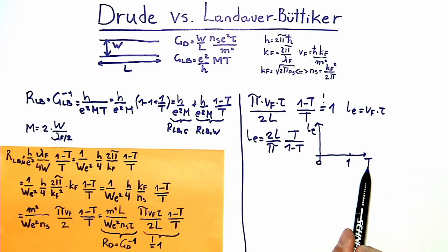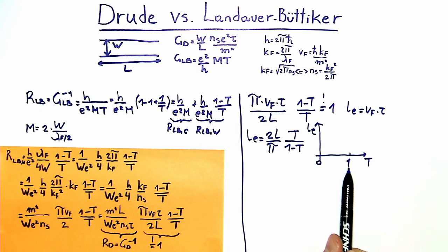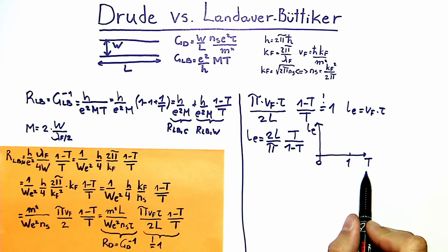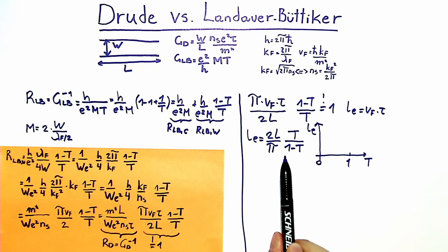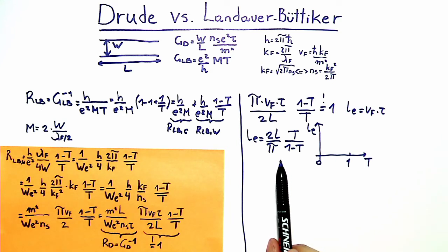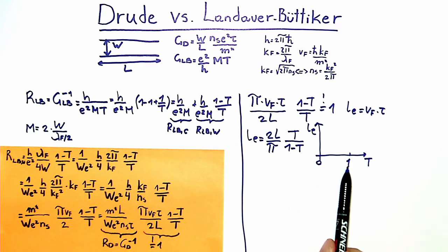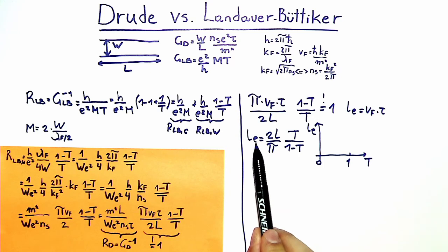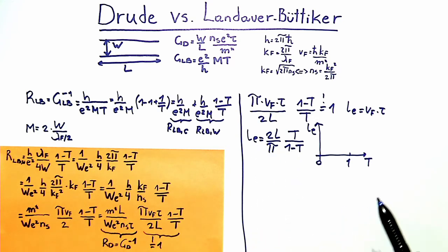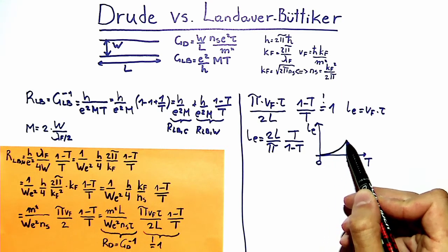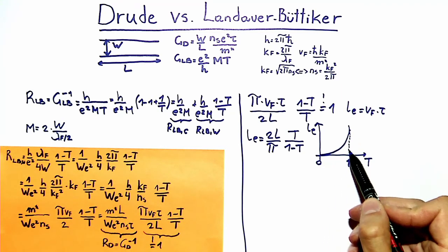Since t is a probability, it ranges from 0 to 1. If t = 0, the mean free path also goes to 0 — intuitively clear, because zero transmission in the wire corresponds to zero mean free path in the Drude picture. If t goes to 1, we have an ideal wire and the mean free path diverges to infinity. The dependence looks like a curve going from zero to infinity.